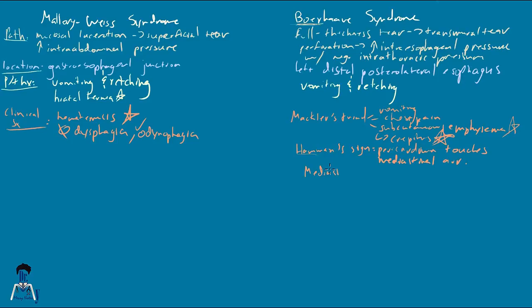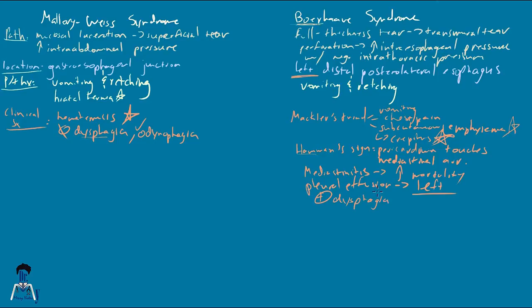With Boerhaave syndrome you might also have mediastinitis, which carries a high mortality — mediastinitis is not possible with Mallory-Weiss. Also remember the transmural tear happens in the left distal posterolateral esophagus, so a patient with Boerhaave syndrome may get a pleural effusion on the left side. If the perforation occurs in the mid-esophagus, you might get a pleural effusion or hydrothorax on the right side. There is no dysphagia for Mallory-Weiss, but there may be dysphagia for Boerhaave if there's a cervical perforation.